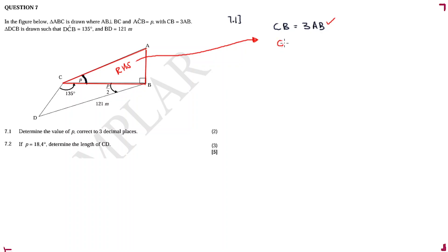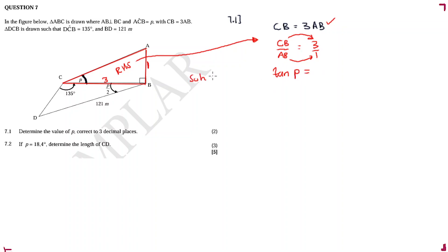CB over AB is equal to three over one. If I divide both sides by AB, AB cancels, giving CB = 3 and AB = 1. So now I have my sides in ratio form — CB is 3 and AB is 1. That's still fine because we're working with ratios.